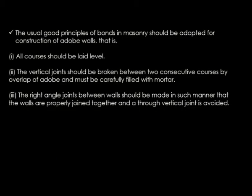The usual good principles of bonds in masonry should be adopted for construction of adobe walls — that is, all courses should be laid level. The vertical joints should be broken between two consecutive courses by overlap of adobe and must be carefully filled with mortar. The right angle joints between the walls should be made in such a manner that the walls are properly joined together and through vertical joints are avoided.